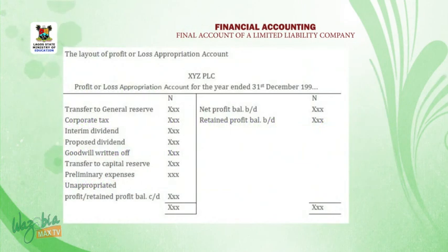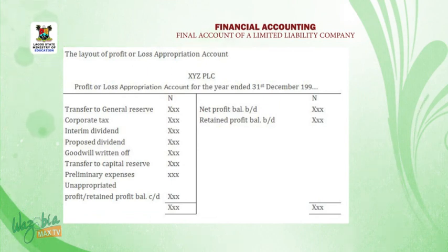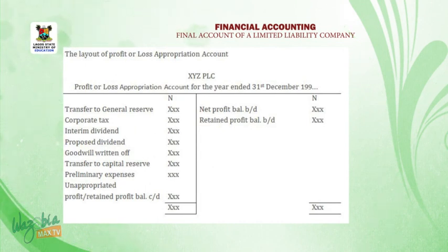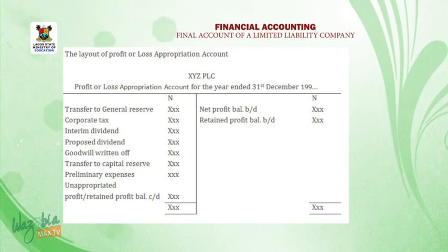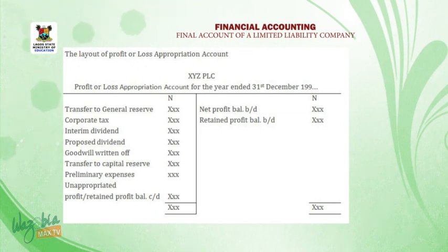We now look at the layout of the profit or loss appropriation account, either in T-format or vertical format. For the T-format, we draw our T-ledger and give it a heading: XYZ PLC, profit or loss appropriation account for the year ended 31st December 19--. On the debit side: general reserve, corporate tax, interim dividend, proposed dividend, goodwill written off, capital reserve, and preliminary expenses. On the credit side: net profit balance brought down, and retained profit balance brought down. Where the total of the credit side is greater, we have unappropriated or retained profit balance carried forward.